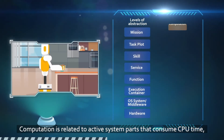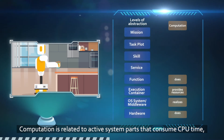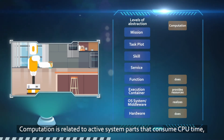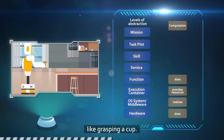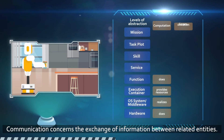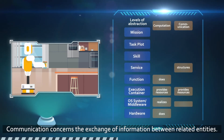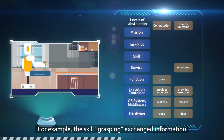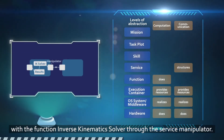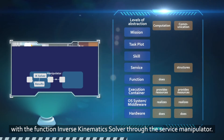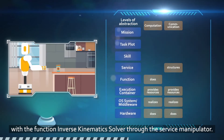Computation is related to active system parts that consume CPU time, like grasping a cup. Communication concerns the exchange of information between related entities. For example, the skill grasping exchanged information with the function inverse kinematics solver through the service manipulator.